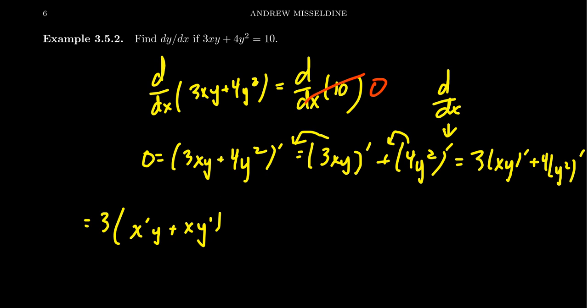When we take the derivative of the y squared, notice we're taking the derivative with respect to x, not with respect to y. y is a function of x, even if we don't have that explicit formula right now. So when we take the derivative of y squared, remember we're taking the derivative with respect to x. Therefore, the chain rule comes into play. We have the outer function y squared, for which when we take its derivative by the power rule, we're going to end up with a 2y.